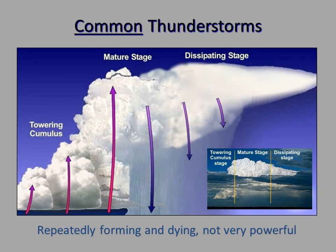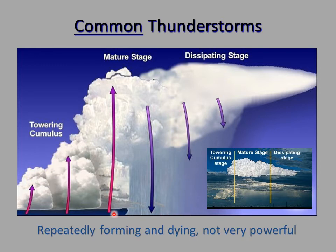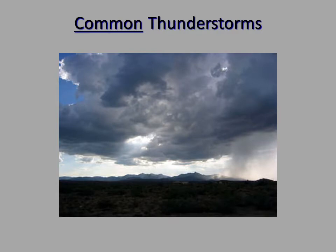Common thunderstorms go through this cycle. You have the initial instability — the warm air rises, you reach 100% dew point, you release the latent heat as water vapor condenses into water droplets. It gets bigger and bigger, and eventually those water droplets get so big they fall out of the cloud. You have a big updraft, a big downdraft — this is your mature stage. But eventually that downdraft pumps cold air down below the storm, cutting off the updraft, and then it will dissipate. These thunderstorms will repeatedly form and die and they're not very powerful.